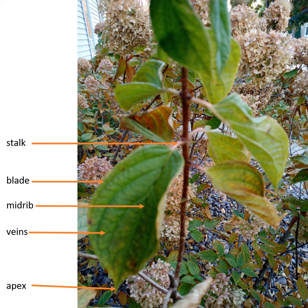Seed dispersal. The spreading of seeds from the parent plant to other areas is called seed dispersal. The agents of seed dispersal include the wind, water, man and animals, and by explosion.